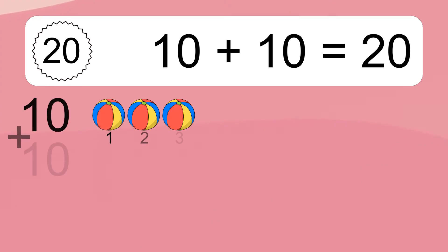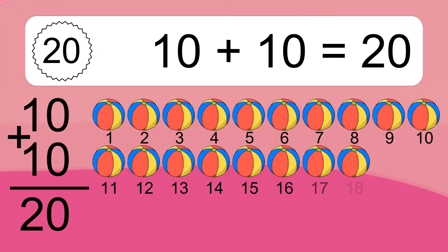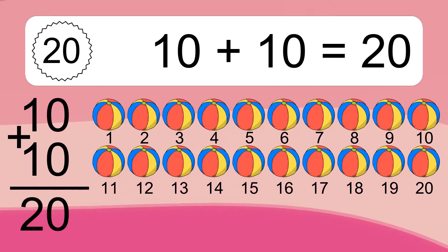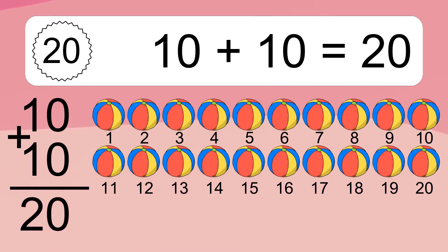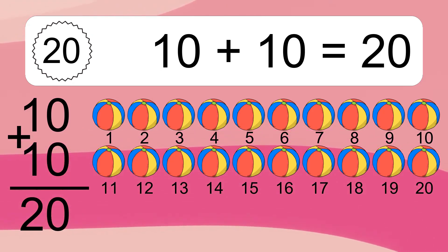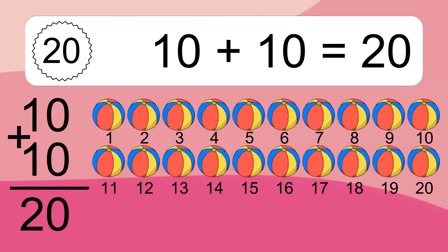10 plus 10 equals 20. Let's count it: 1, 2, 3, 4, 5, 6, 7, 8, 9, 10, 11, 12, 13, 14, 15, 16, 17, 18, 19, 20.